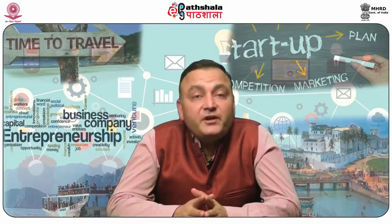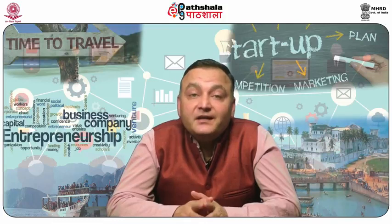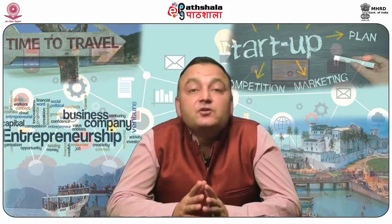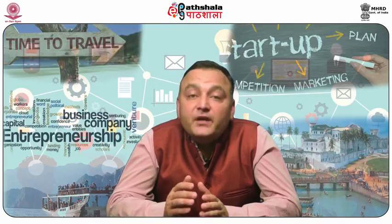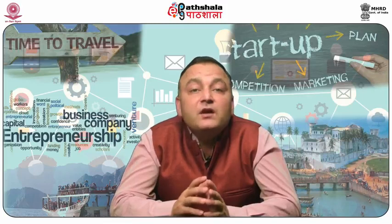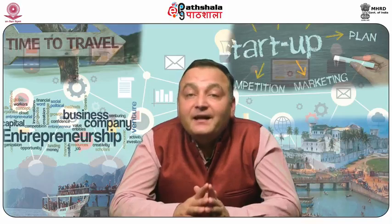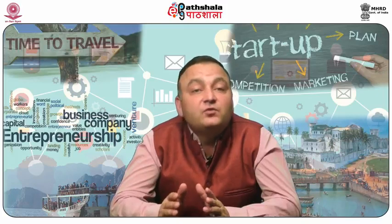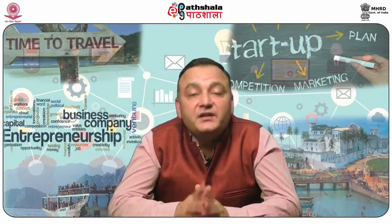The Air Act of 1981 is for prevention and control of pollution. This act has been enacted to provide for the prevention, control and abatement of air pollution, for the establishment of boards, conferring on and assigning to such boards the powers and functions relating thereto. It is a central government law.